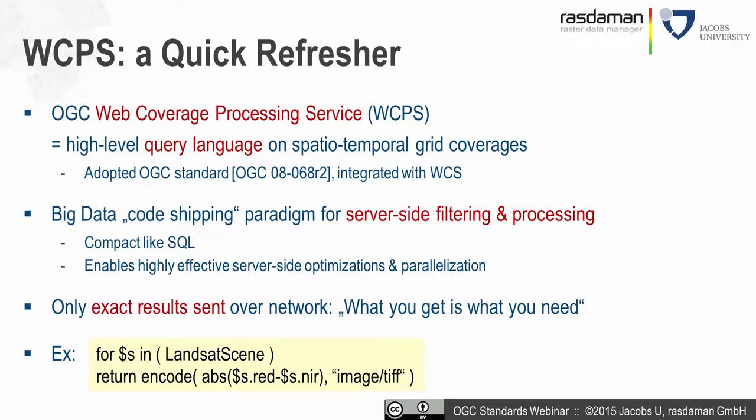Here is a small example. We loop over what is in parenthesis — just one element, so our loop executes once. Variable $s is bound to LandsatScene. For this $s, we want to know the absolute of the difference between red and near-infrared, and that should be shipped as a TIFF image. The response to this request would be a single TIFF image.